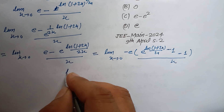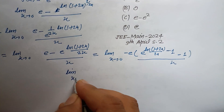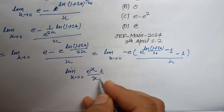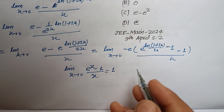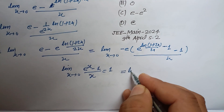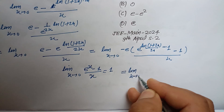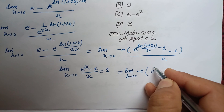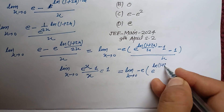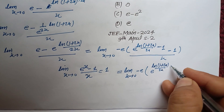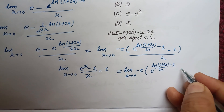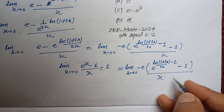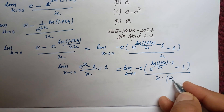We now apply the standard limit: (e^x - 1)/x = 1. Taking the part: limit as x tends to 0, we have minus e times e raised to [ln(1+2x)/(2x) - 1] minus 1, over x.